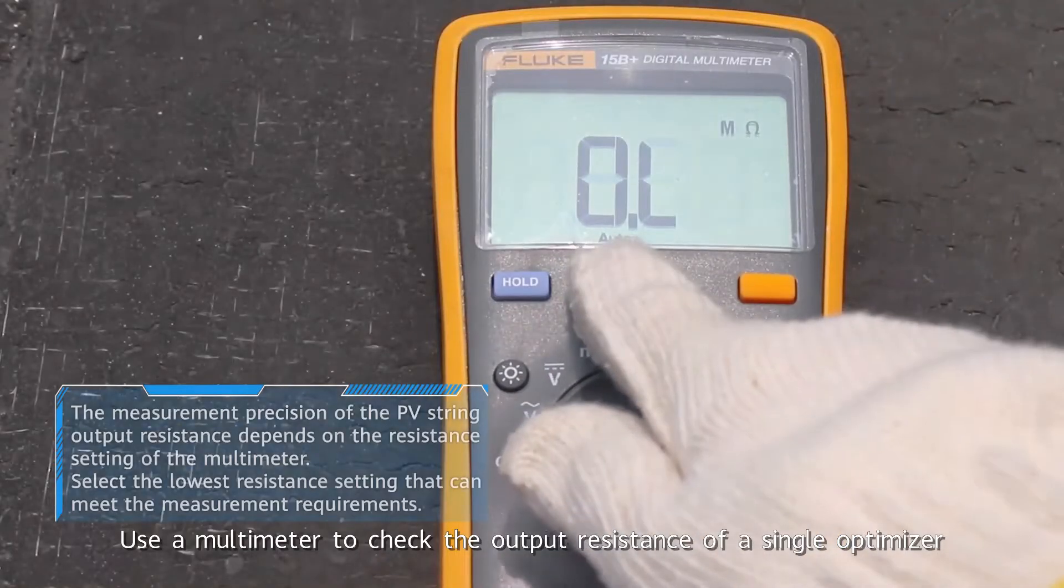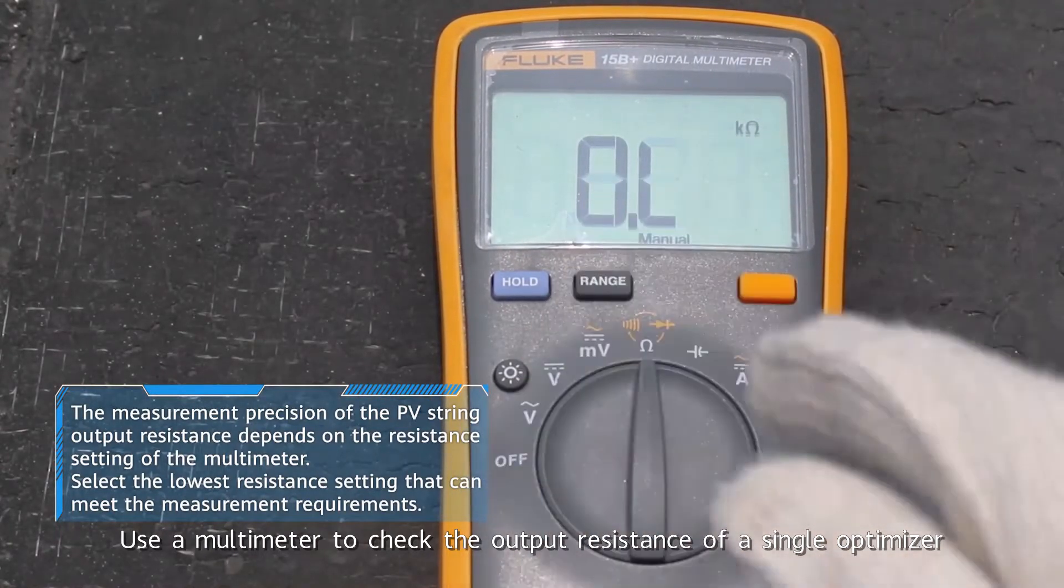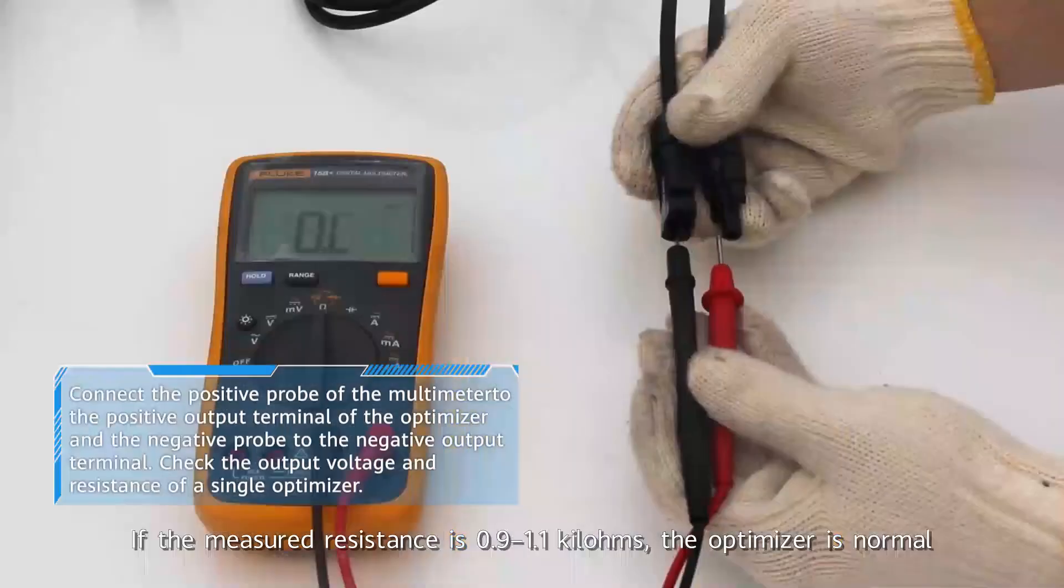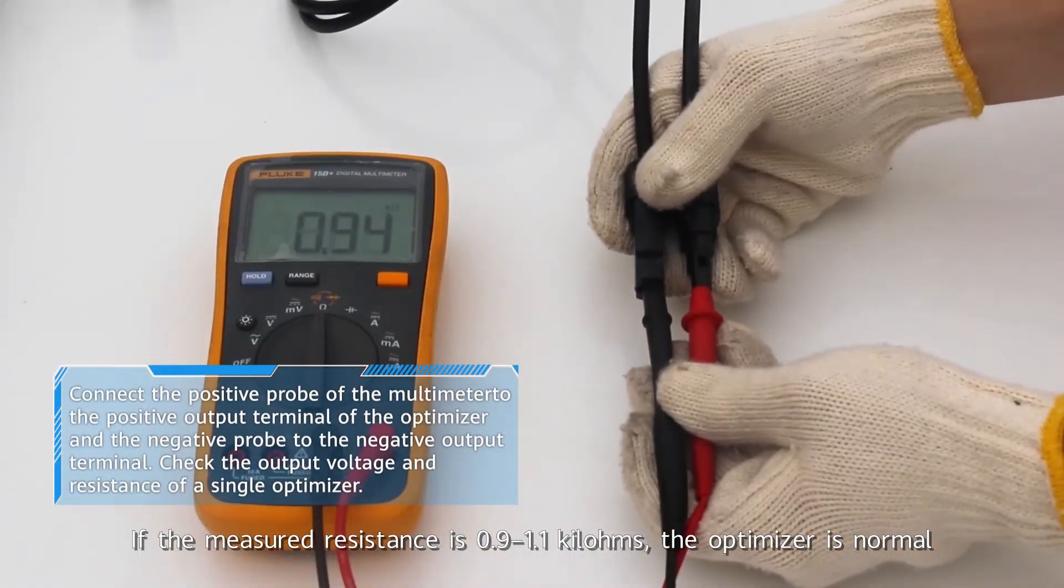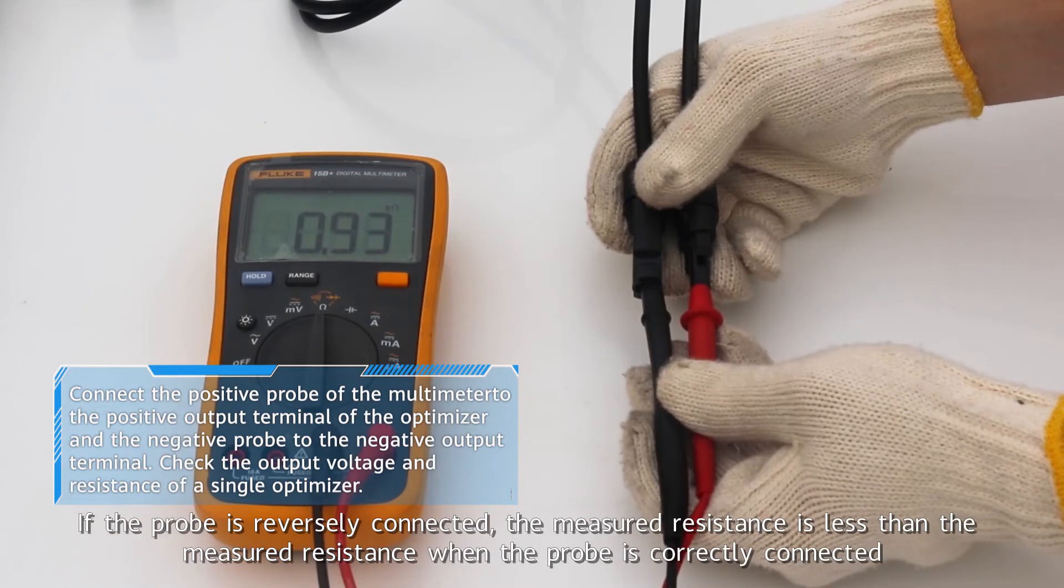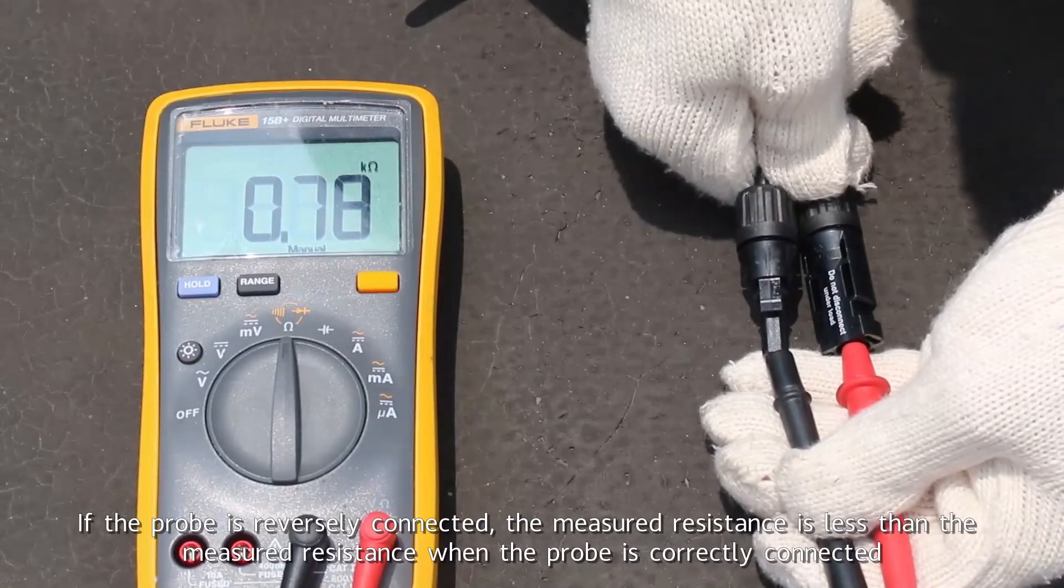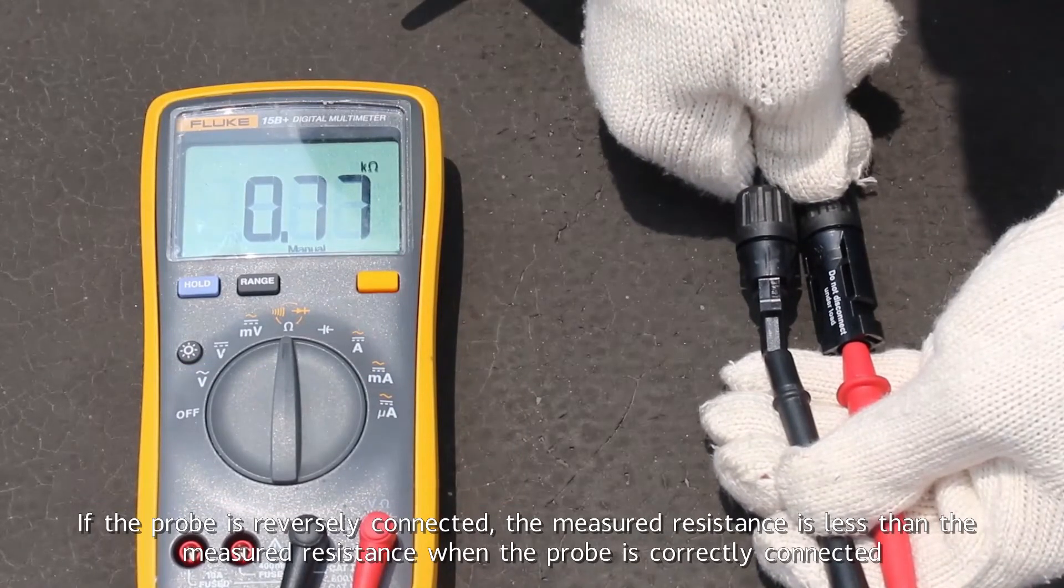Use a multimeter to check the output resistance of a single optimizer. If the measured resistance is 0.9 to 1.1 kilohms, the optimizer is normal. If the probe is reversely connected, the measured resistance is less than when the probe is correctly connected.